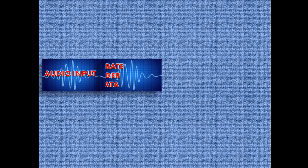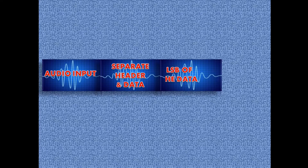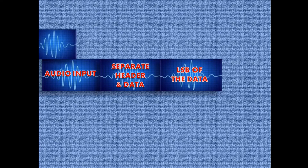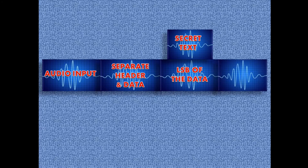Let us see how to hide a secret text in an audio file. First, take the input audio — the audio in which you want to hide the secret data. After that, separate the header and the data, because the header of an audio file is very sensitive and you must not change it. After that, replace the LSB, that is the least significant bit of the data, with the secret text.